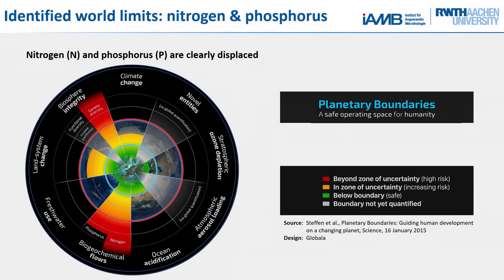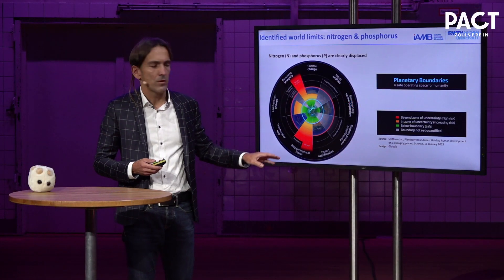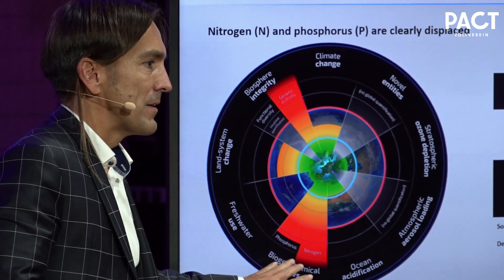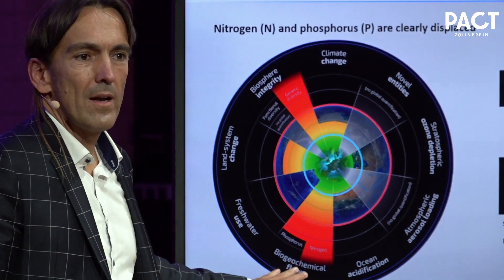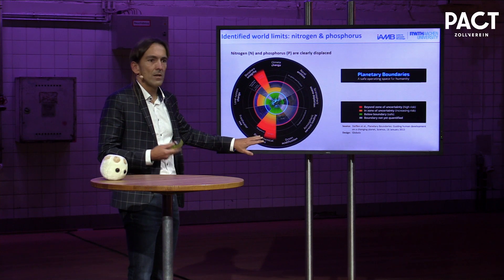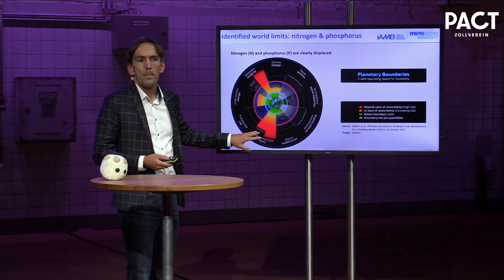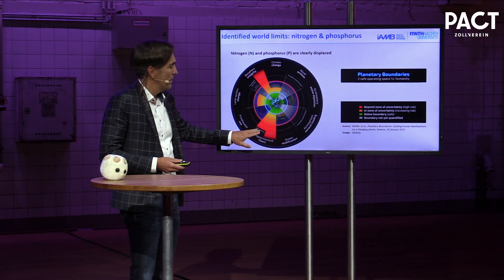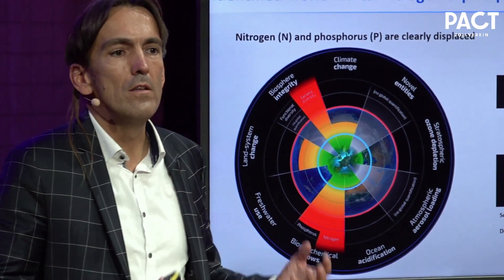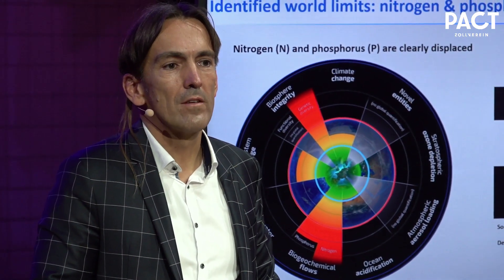These are the planetary boundaries — from a study now about five years old, but a very easy concept that we have certain boundaries we shouldn't cross, shown as a blue ring. What you see is that several are already crossed. Two of them are due to elements: nitrogen — humankind learned how to use nitrogen from the air and put it into fertilizers, which is why we progressed so much in agriculture — and phosphorus. I will tackle phosphorus and also climate change, which we know is very challenging.